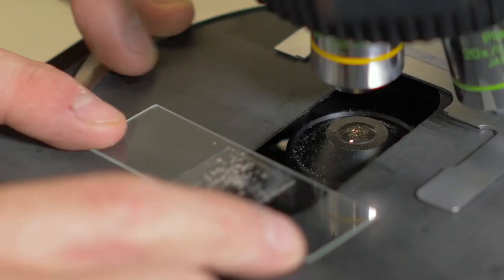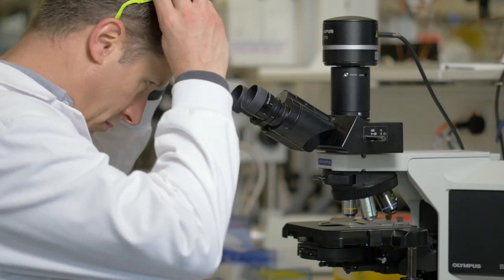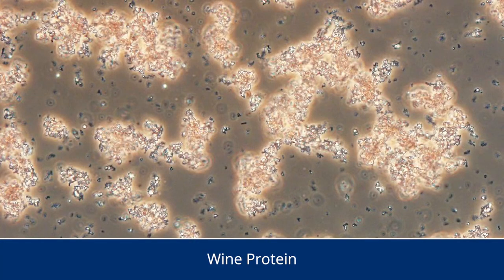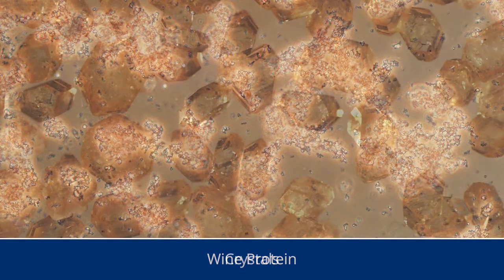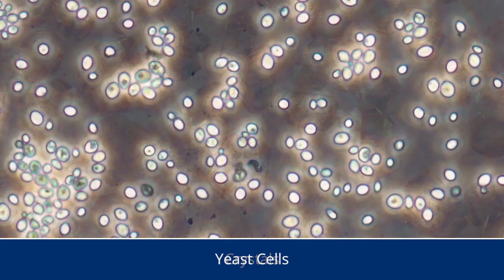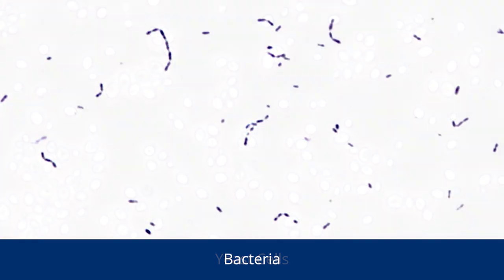Place the prepared slide under the microscope. Wine protein appears quite granular. Crystals have a structured shape — they can appear like diamonds or sometimes glass-like shards. Yeast cells are generally spherical or ovoid in shape. Bacteria are round or rod shaped, but generally 10 times smaller than yeast.